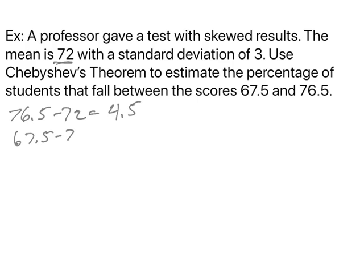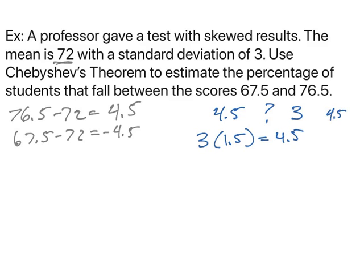Same with 67.5, subtract the mean, we get negative 4.5. So we need to look at how does 4.5 compare to 3? Well, 3 times 1.5 gives me 4.5, or you could have taken 4.5 divided by 3 and you get 1.5. So these two values, 67.5 and 76.5, are 1.5 standard deviations from the mean.